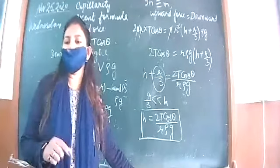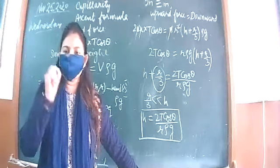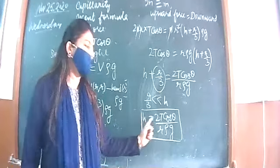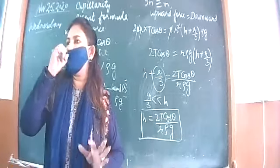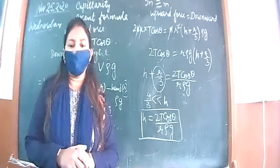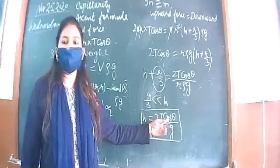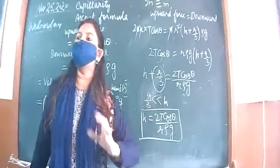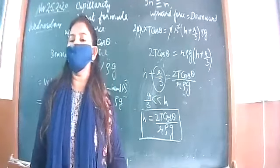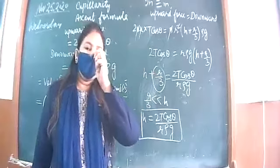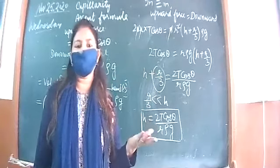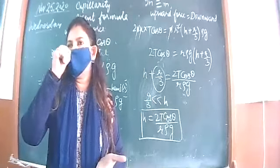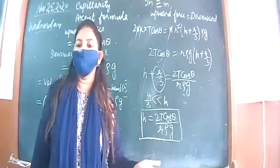Height is directly proportional to cosine of the angle of contact. For all acute angles of contact, cos theta is positive, so height is positive — those liquids rise in the capillary tube. Water and water-like liquids have an acute angle of contact with glass, so they rise. On the other hand, if the angle of contact is obtuse, cos theta is negative, so height is negative.